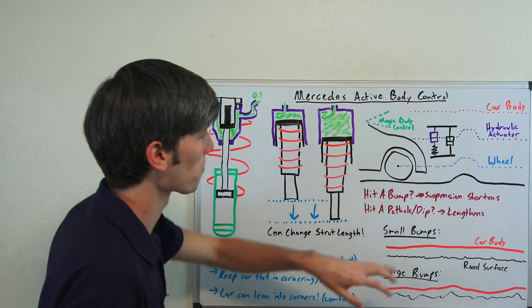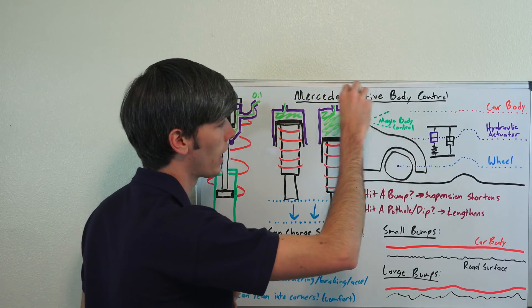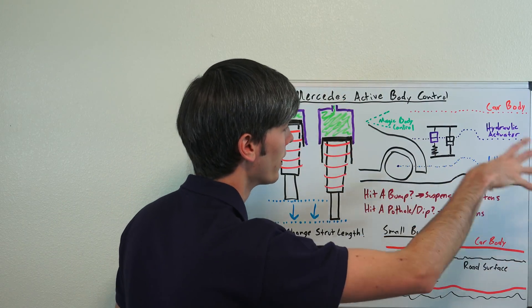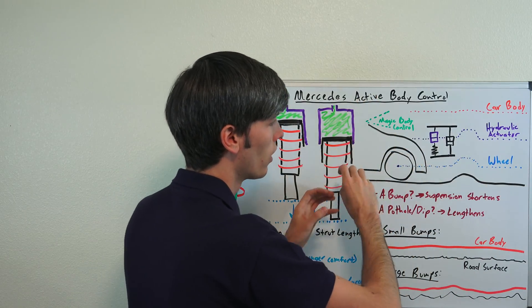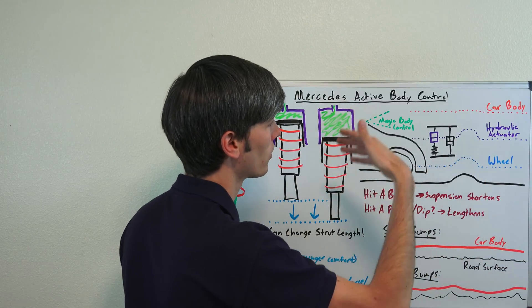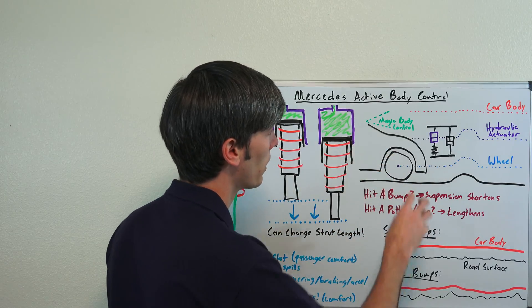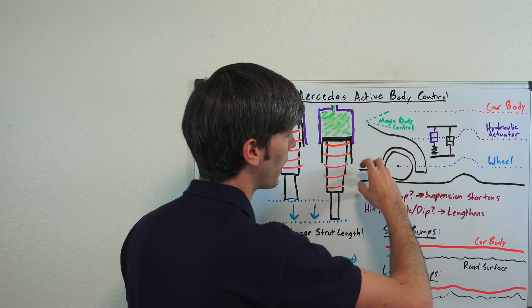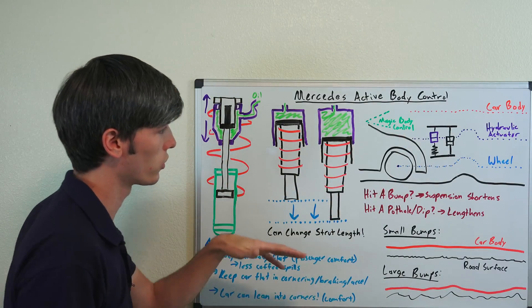Now they have another thing which they call magic body control. That's where they have a camera looking out at the road ahead, and so it sees what's coming up and then it actively changes it. It takes it one step further. This reacts to what it feels versus magic body control uses a camera and actively looks at what's ahead and uses that to change the suspension length.